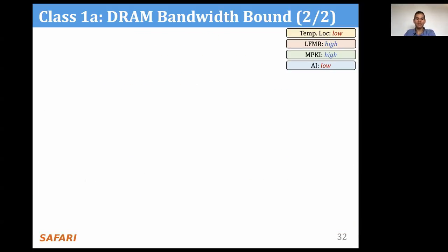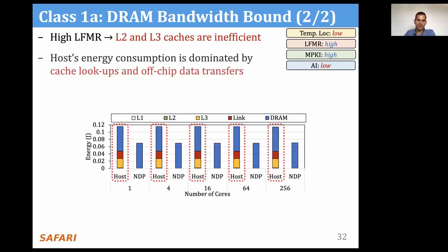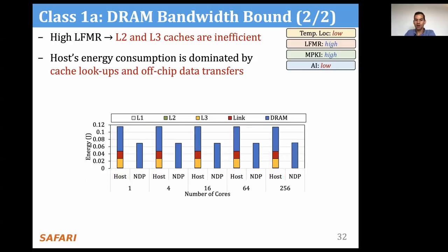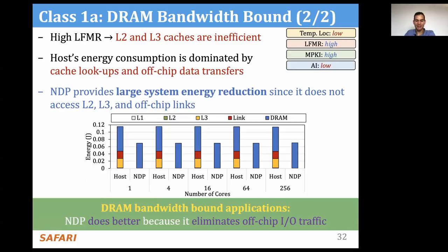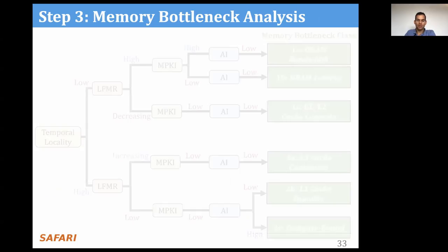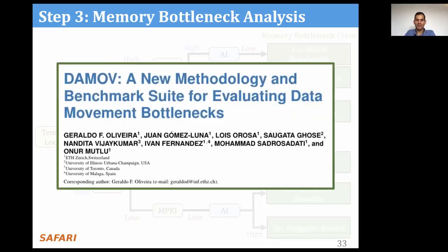We also analyze the energy consumption of DRAM bandwidth-bound applications. Since these applications have high last-level cache miss ratio, they do not make effective use of the L2 and L3 caches. We observe that energy consumption in the host system is dominated by cache lookups and off-chip data transfers. On the other hand, NDP provides large system energy reduction since it does not access L2 and L3 caches and bypasses the off-chip links. Therefore, the NDP system can reduce energy consumption of DRAM bandwidth-bound applications by eliminating off-chip I/O traffic and cache lookups. We invite you to check our paper for detailed analysis of each of the six classes of data movement bottlenecks.